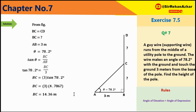Pole के mid तक height BC = 14.36 meter है। पूरी pole की height BD = 2 × BC = 2 × 14.36 = 28.72 meter। Pole की total height 28.72 meter है।